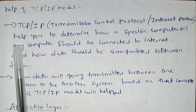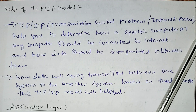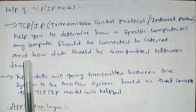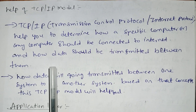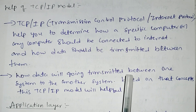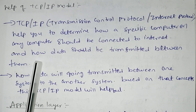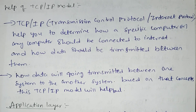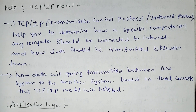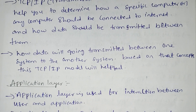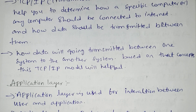TCP/IP helps you to determine how a specific computer or any computer should be connected to the internet, and how data should be transmitted between them. It defines how data will be transmitted from one system to another system, and how a computer can connect to the internet and transfer data to other hosts.